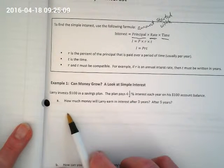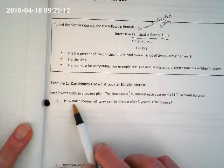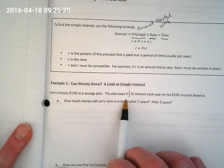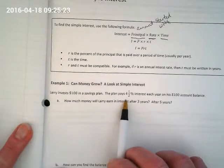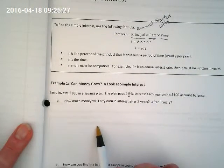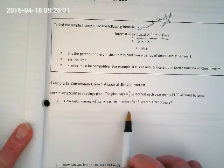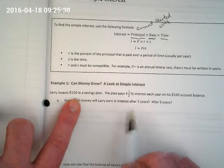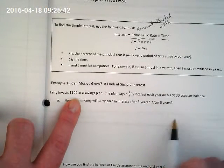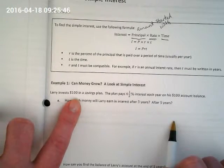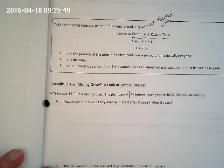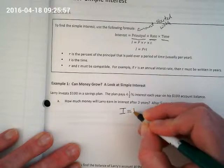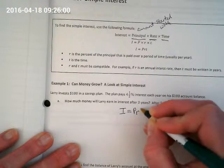Let's look at this first problem. Larry invests $100 in a savings plan - what does that make the $100? It's the principal, right. The plan pays 4.5% interest each year on his $100 account balance. We're going to find out how much money Larry will earn in interest after three years and after five years. The interest - and I want you guys writing this down - is equal to the formula: principal times rate times time.